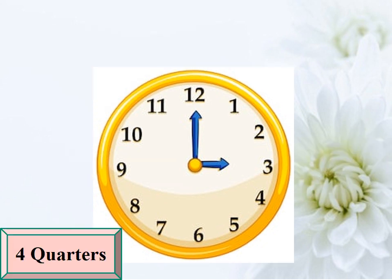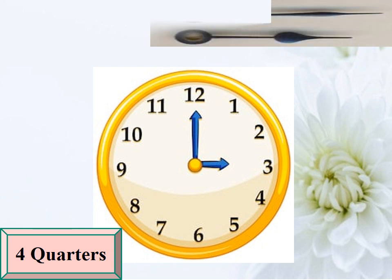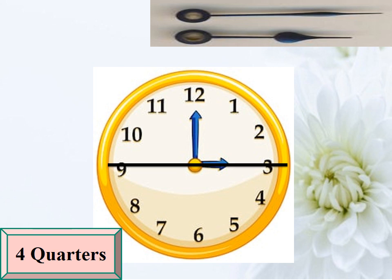In an analog clock, our focus is on the hands of the clock. If we were to slice a clock into four equal sections, we would have four quarters, and each quarter represents a 15-minute section.